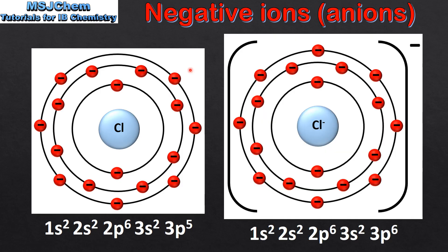The chlorine atom can gain one electron in its outer energy level to form a 1- ion. The chloride ion still has 17 protons in its nucleus but has gained one electron to give it a one negative charge. If we look at its electron configuration we can see that it now has 8 electrons in the third main energy level, giving it the electron configuration of a noble gas.